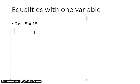Now we're going to do equalities with one variable. You have 2x - 5 = 15.